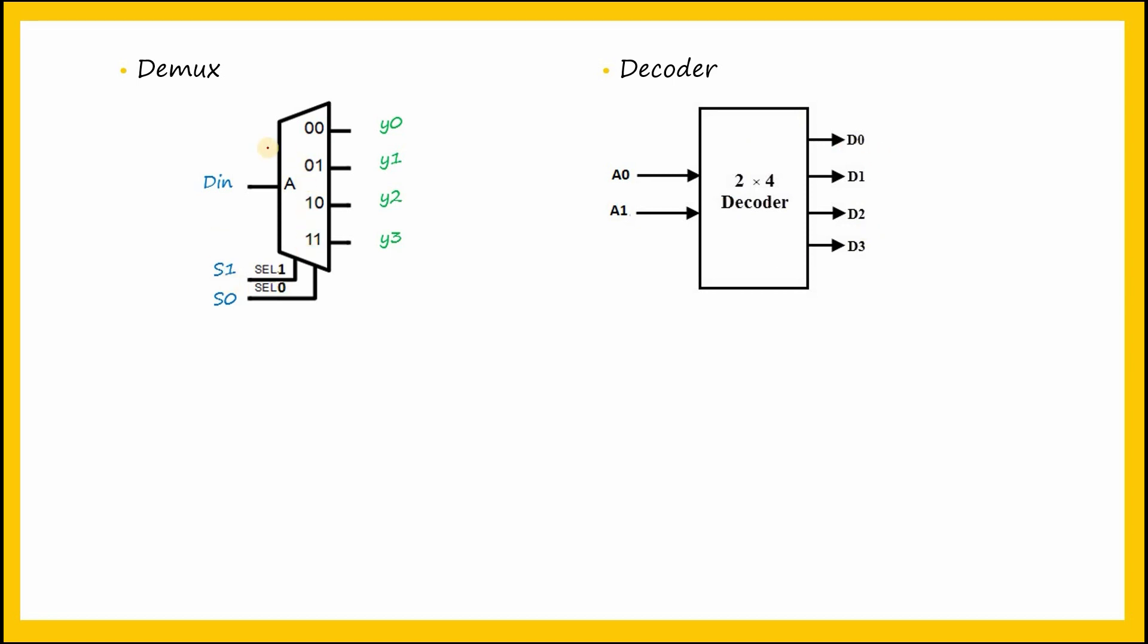From the diagram, we can see that the demultiplexer has only one input data terminal that is directed to one of its many output data lines, while the decoder has more than one input data lines which are decoded to output signals.